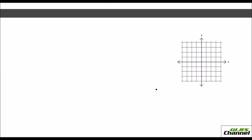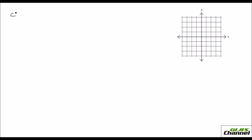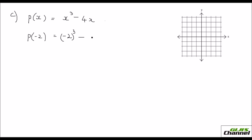Finally let's see an example for 3 zeros. I take my polynomial P of X as X cubed minus 4X. So let's put the values. P of minus 2: that's minus 2 the whole cube which is minus 8, and 4 times minus 2 becomes plus 8. So you have minus 8 plus 8 which equals 0 — you've got 1 zero.